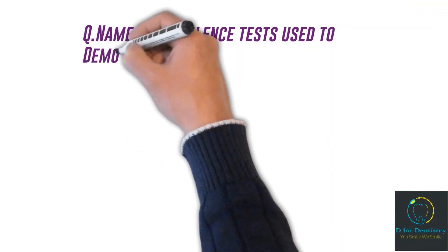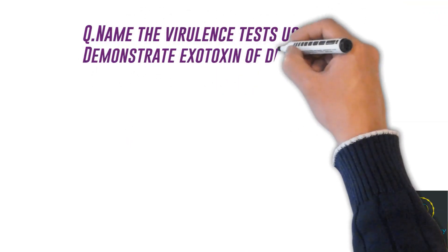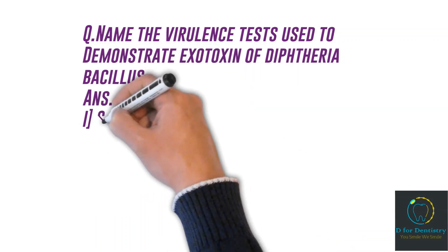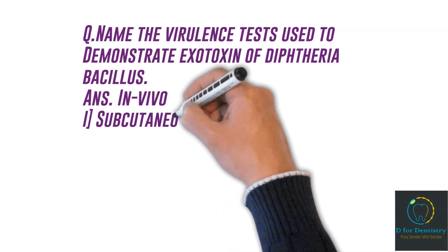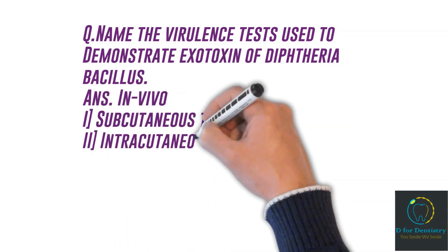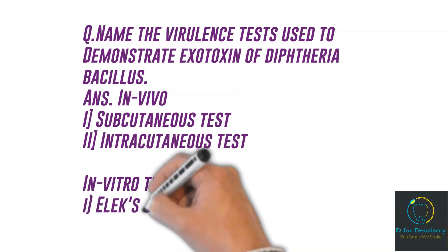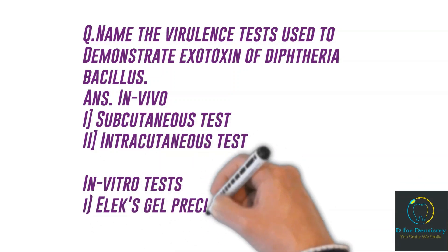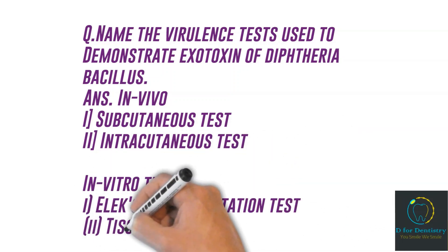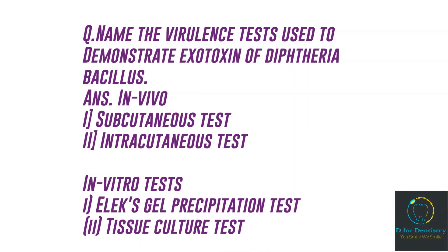Question: Name the virulence tests used to demonstrate exotoxin of diphtheria bacillus. Answer: In vivo tests — subcutaneous test and intracutaneous test. In vitro tests — Elek gel precipitation test and tissue culture test.